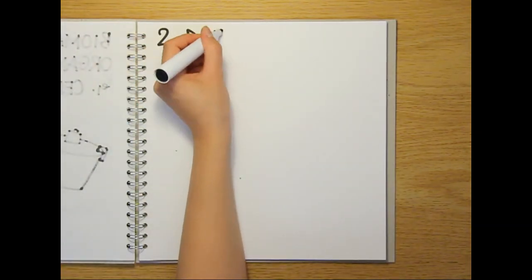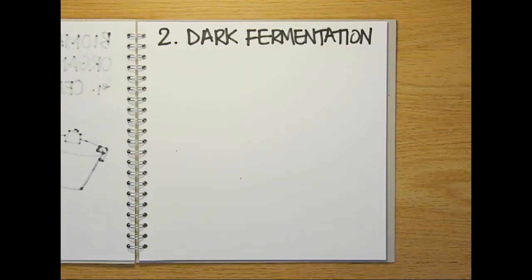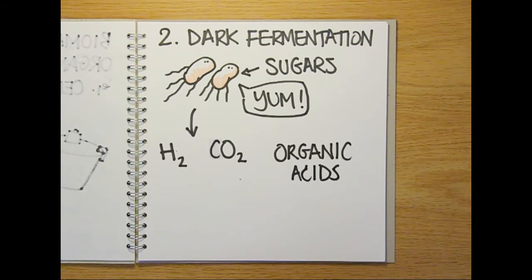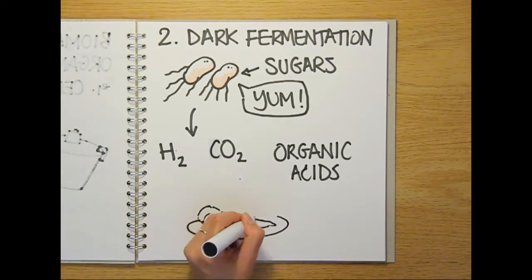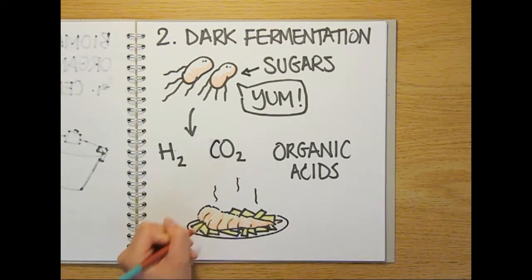The next method of biohydrogen production is called dark fermentation. As the name suggests, this is carried out in the absence of light. Bacteria consume the sugars from the treated biomass to produce hydrogen, carbon dioxide and organic acids. Organic acids are harmless but smelly compounds including acetic acid, which goes very well with fish and chips.